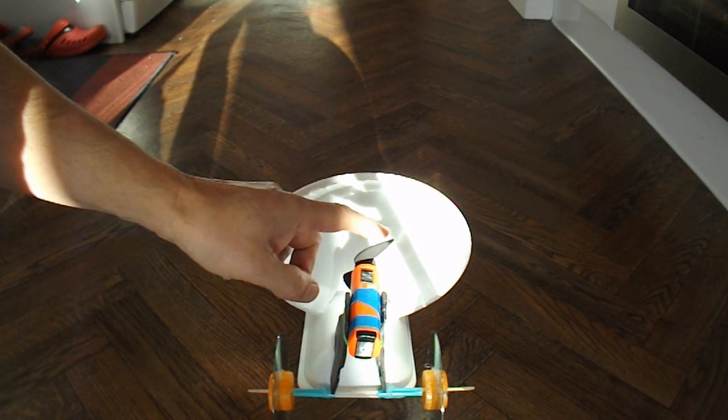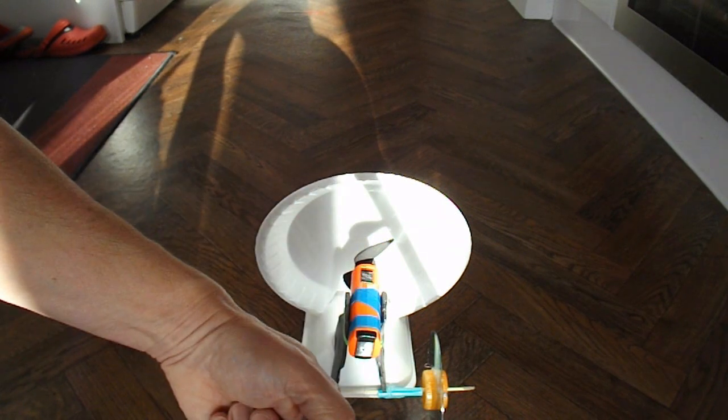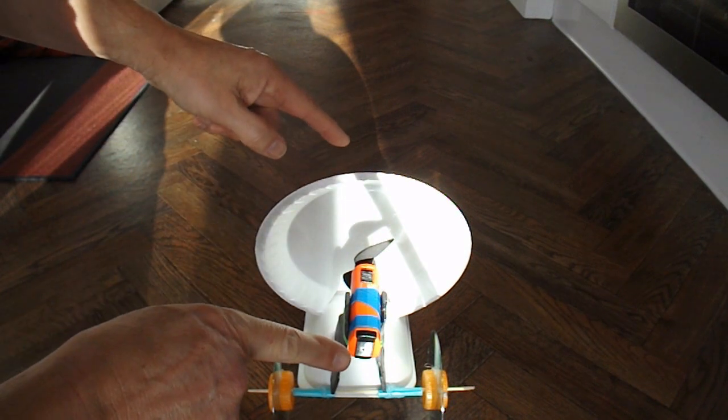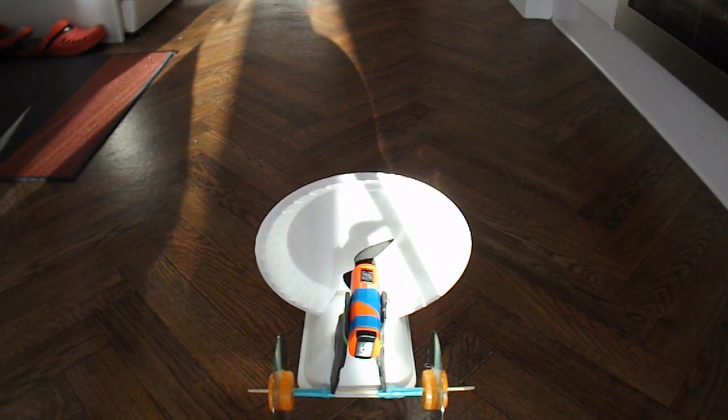But at the same time the fan is blowing that way which means the fan itself is trying to go this way, so we should have equal and opposite cancelling each other out so it shouldn't move at all.